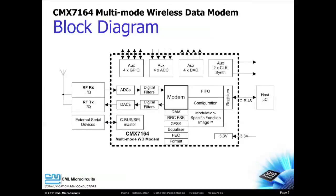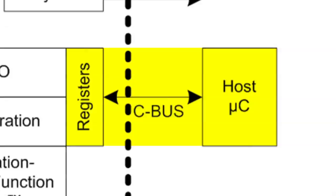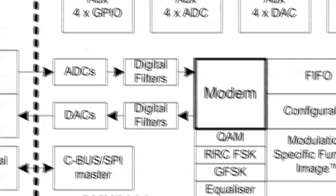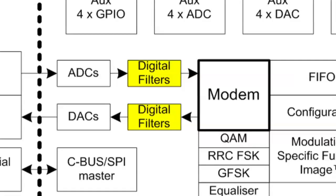Let's take a closer look at the CMX7164. The microcontroller communicates with the CMX7164 using a simple 4-wire serial interface. Streaming data transfers help to minimize the microcontroller workload. The flexible modem allows a wide variety of modulation types and data rates. The bandwidth and filter response of the integrated digital filters automatically changes with modulation type and data rate, and these filters provide significant adjacent channel rejection.